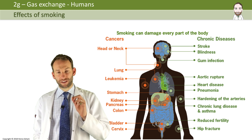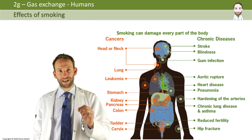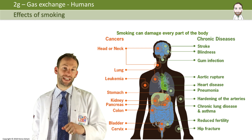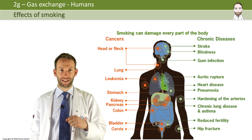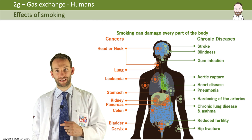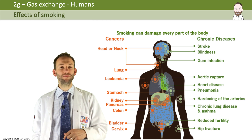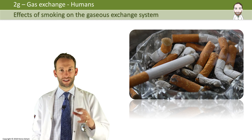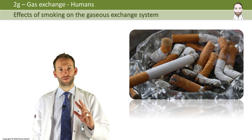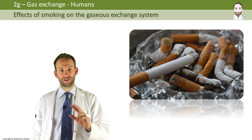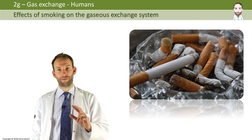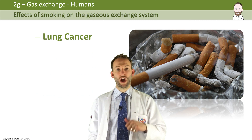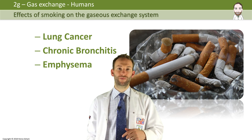You need to know about smoking and the effects of smoking on the lungs and on the cardiovascular system. Let's look at the gas exchange system first — the lungs. There are three real conditions you've got to know about in detail: lung cancer, chronic bronchitis, and emphysema.